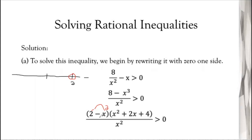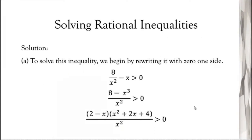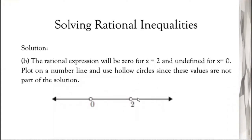For the denominator x², setting x² = 0 gives x = 0. At x = 0, the expression becomes undefined, so x = 0 is included on the number line but with an open circle since it makes the expression undefined. So on the number line we have open circles at x = 0 and x = 2.